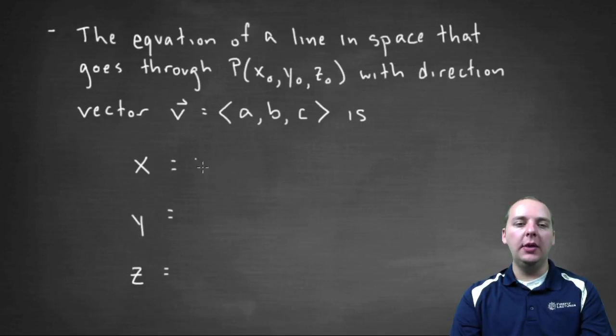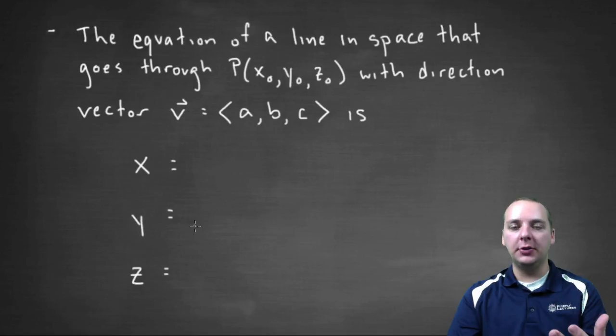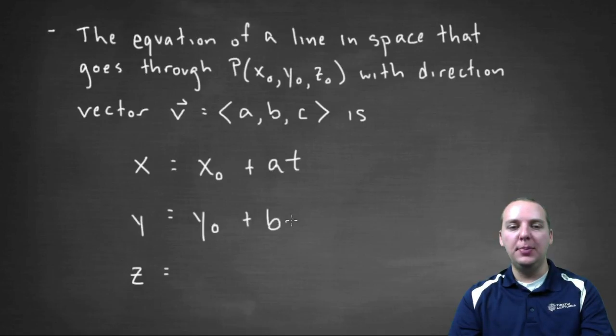Okay, the way that we write our lines in space is in what's called parametric form, which you probably remember from calculus two. We're going to do the same. It's x equals x-naught plus at, then y equals y-naught plus bt, and z equals z-naught plus ct,